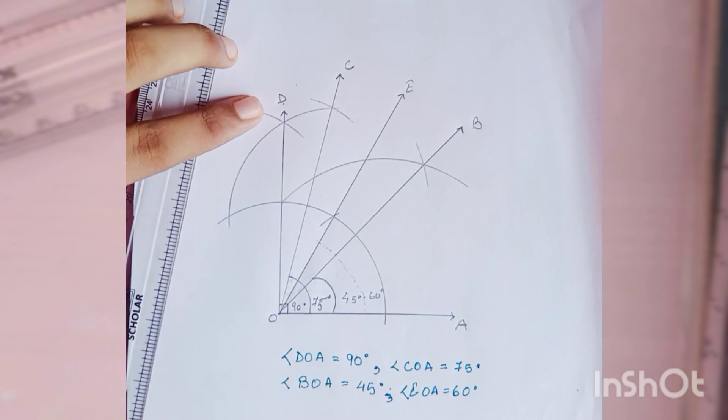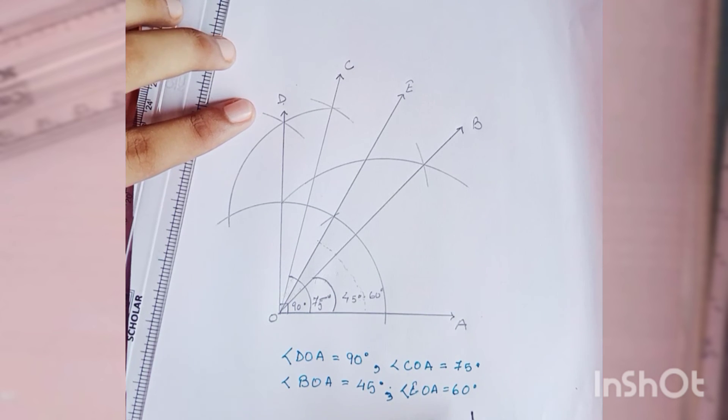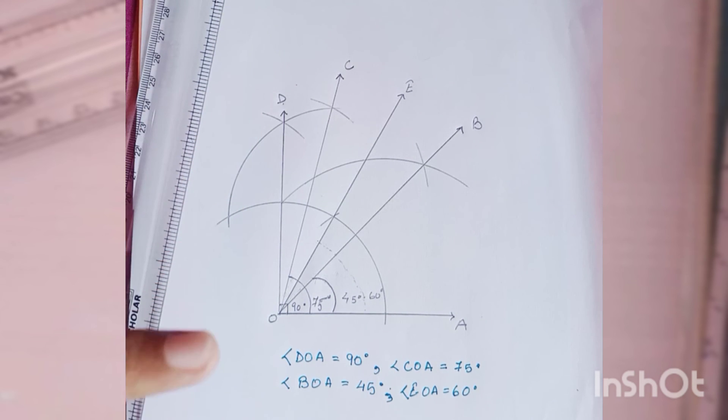So we have learned how to make 90, 75 degrees, 45 degrees, and 60 degrees. For most angles you will have to make 60 degrees compulsory, and 90 degrees also for most angles. But 60 degrees you have to draw for every angle, for each and every angle. For construction of each and every angle, you have to draw 60 degrees.